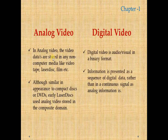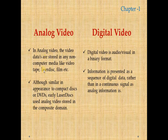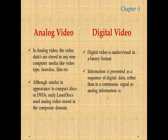Analog videos are stored in non-computer media — for example, the video tape used in older days. Digital video is audio or visual content in binary format. Information is presented as a sequence of digital data rather than as a continuous signal like analog information. That is the nature of digital signals.